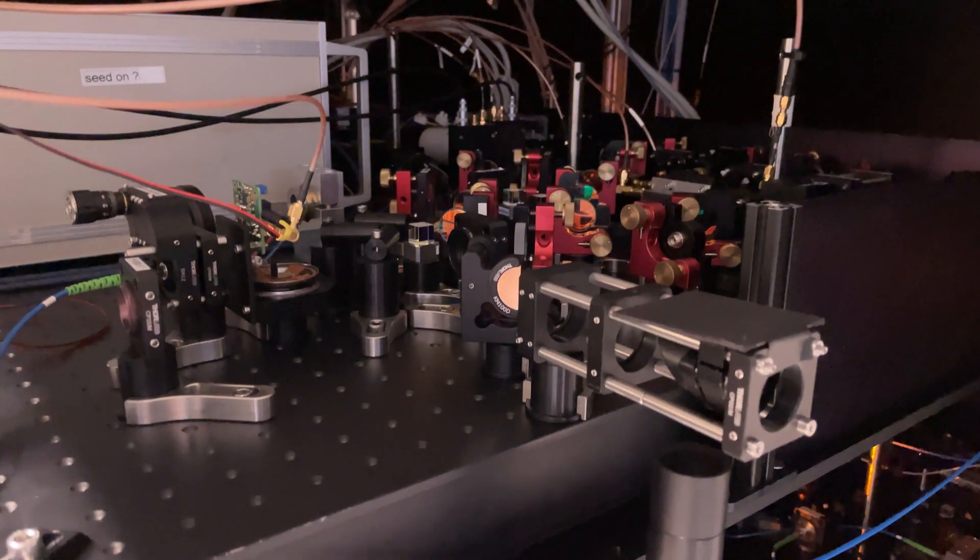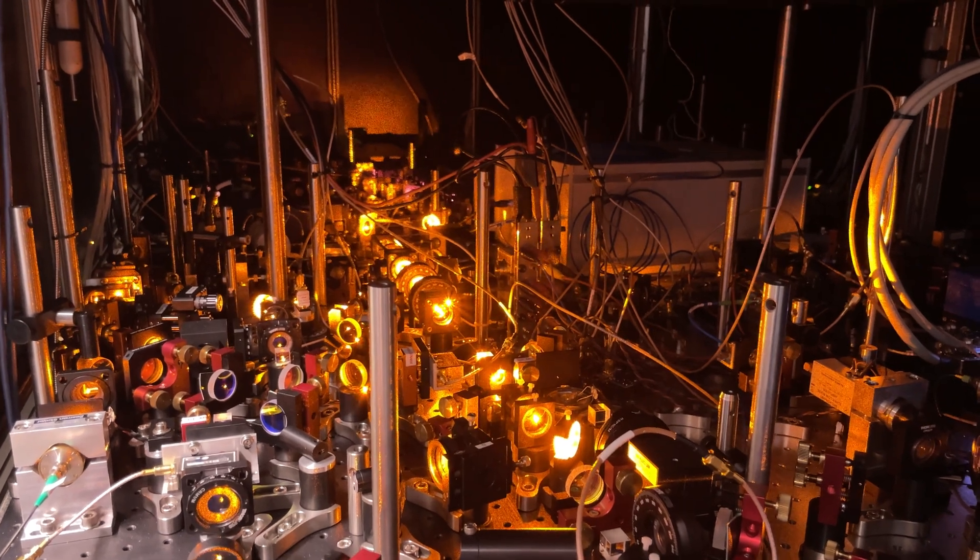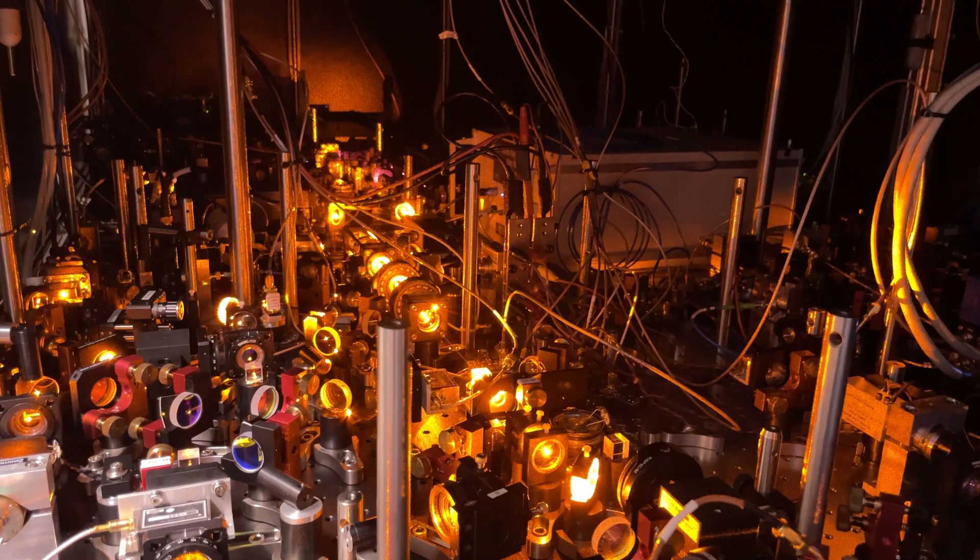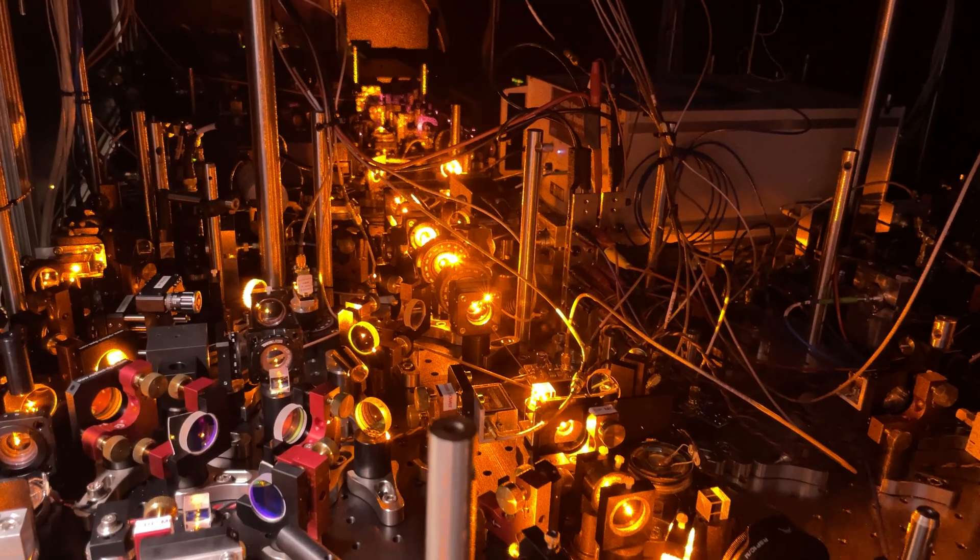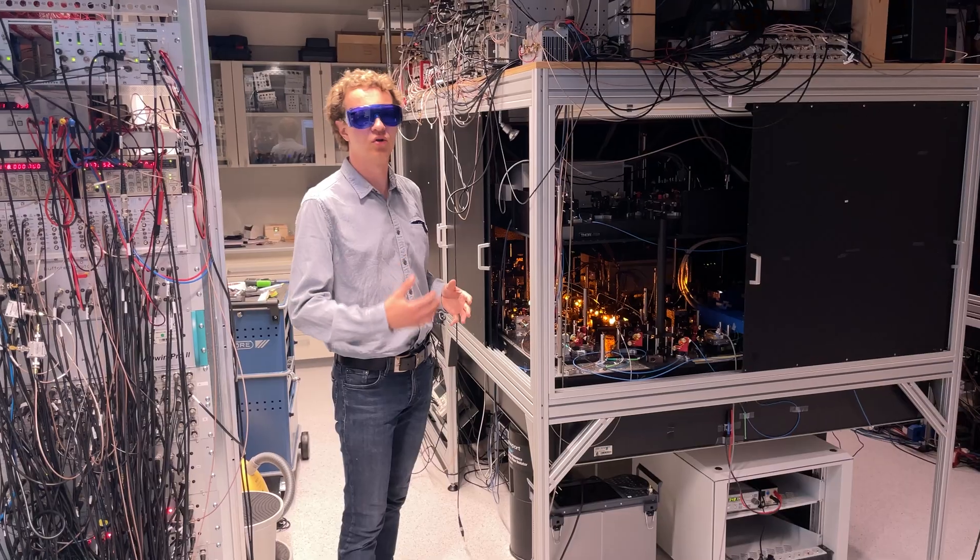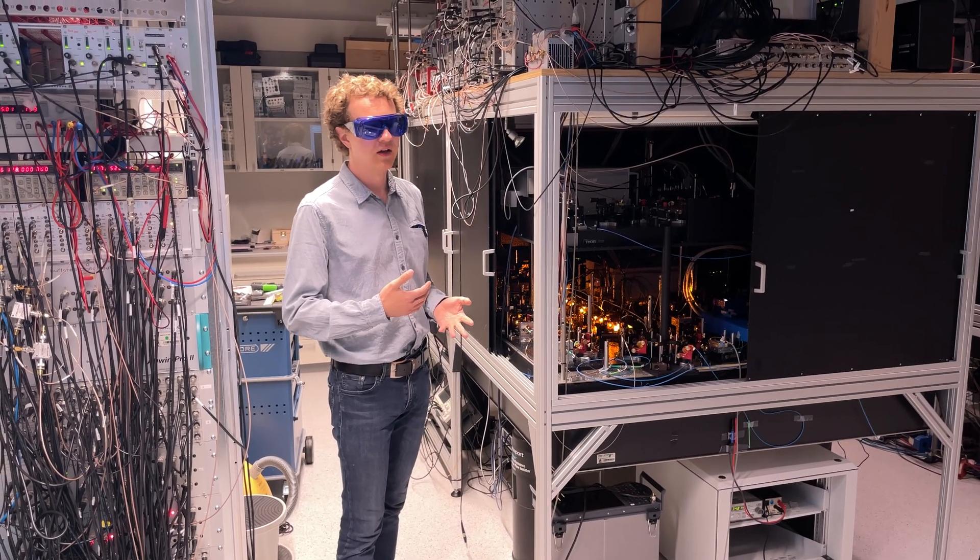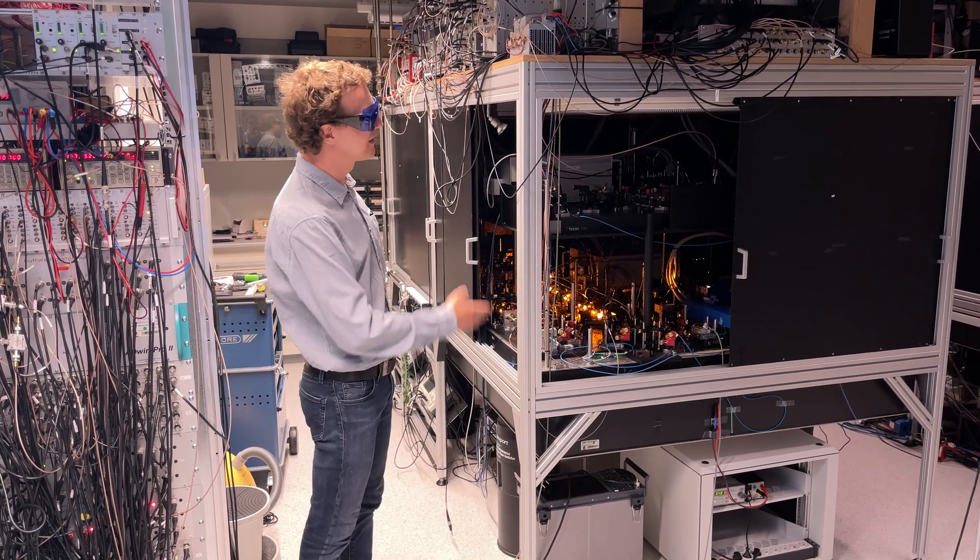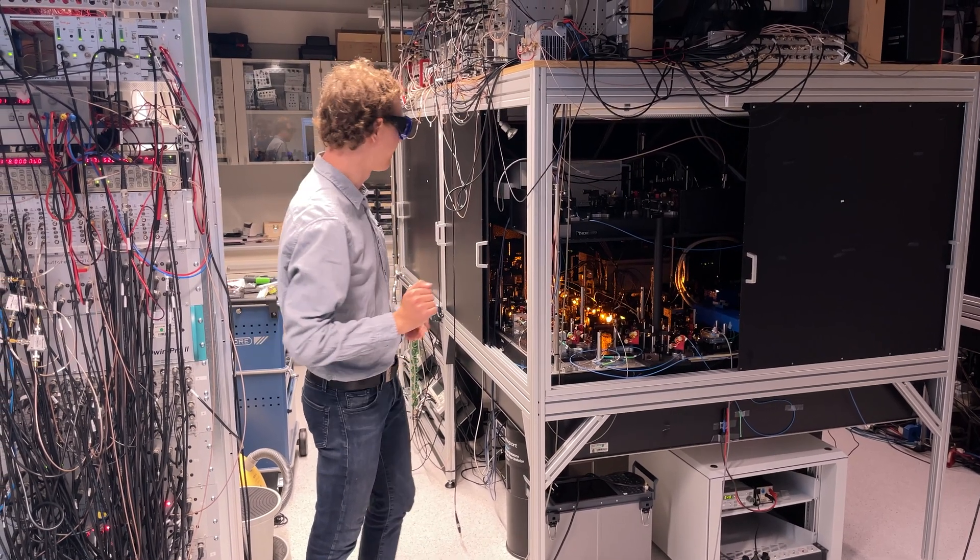And now there's a lot of optics on this table. There's a lot of mirrors and polarization control and so on. So essentially what happens on this table is we prepare the laser for being used afterwards. And in order to do this, we need to control its intensity, its frequency, its polarization and so on. And all these things happen over here. And then we send the laser beam over there to actually be used. And that's what we're going to have a look at next.